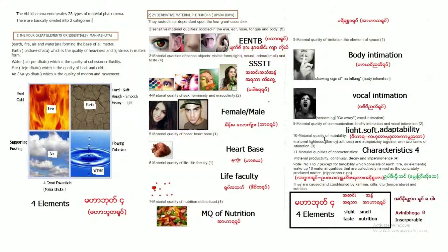And another one is material quality of mutability. You can notice as light, soft, adaptability. In Pali, we call it vikara rupa, lahuta rupa - very light, and muduta rupa, and kammannata rupa. And material quality of the characteristics, four characteristics, they are productivity, continuity, decay, and impermanence. So in short, you can know birth or productivity, getting bigger, continuity, decay, aging, and then death.